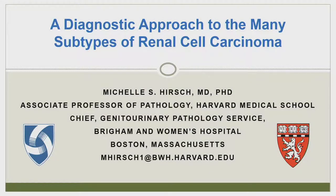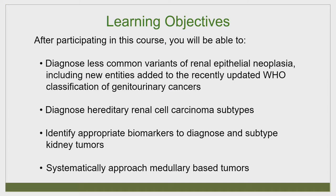I'm going to be talking today about renal cell carcinoma — definitely my favorite of all the GU tumors I work with. There have been a lot of changes over the past 10-plus years. You could argue that we're splitters versus lumpers, but there is a lot of genetic information behind splitting these tumor types, and I do think there's importance to many of them. We'll be talking about newly included WHO entities, some hereditary-related renal cell carcinomas, and how to use biomarkers to identify these various subtypes.